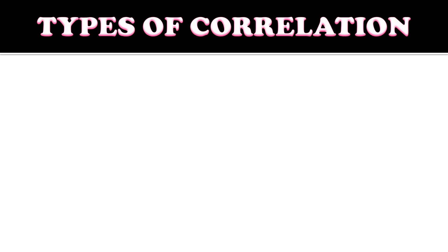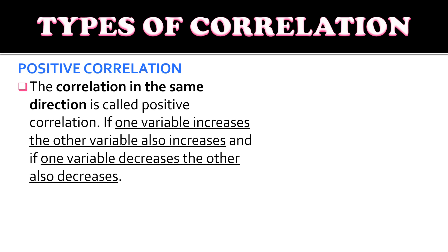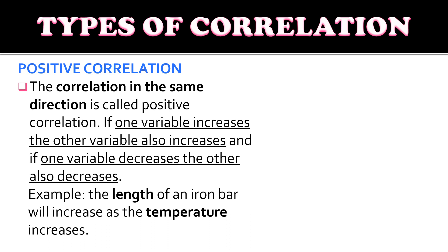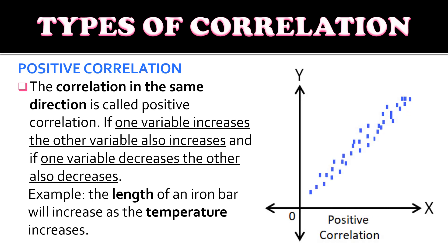There are different types of correlation. First, we have positive correlation. For positive correlation, it is the correlation in the same direction — if one variable increases, the other variable also increases. For example, the length of an iron bar will increase as the temperature increases. As the temperature gets hotter, the length of the iron bar increases. In the graph, this is how it looks like.